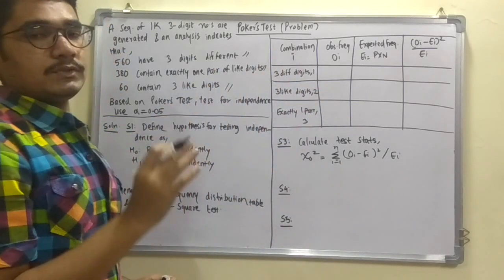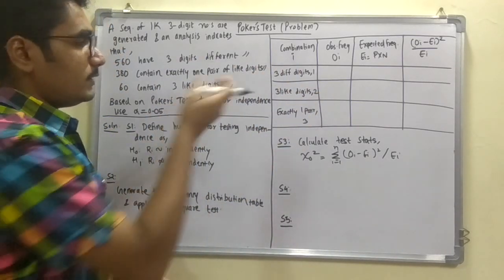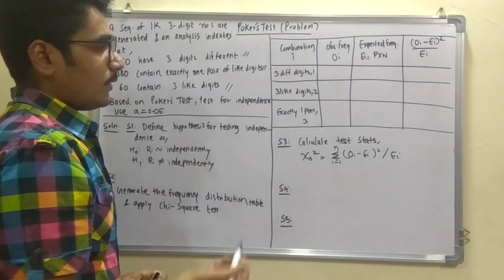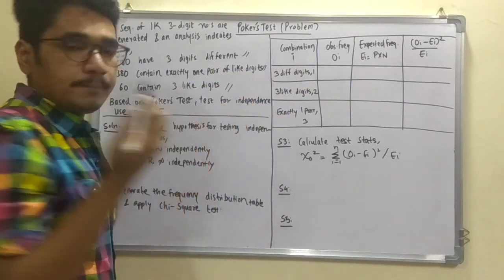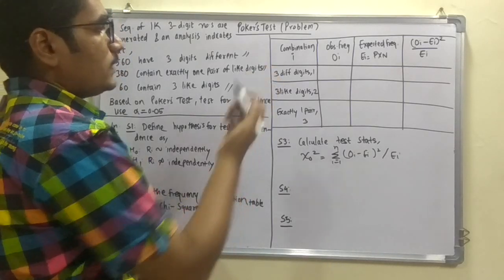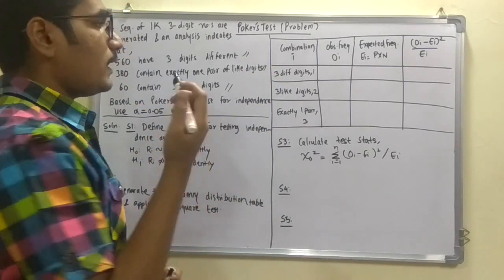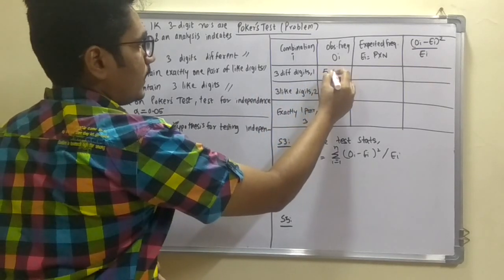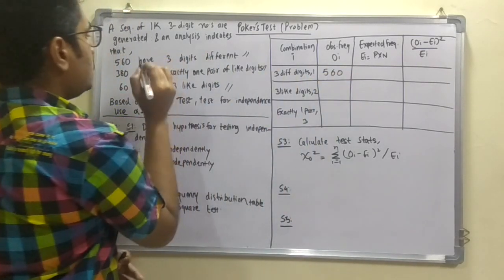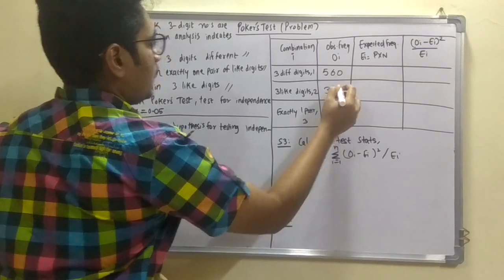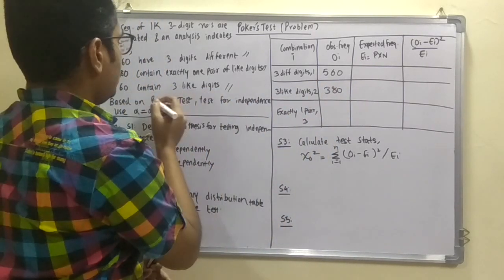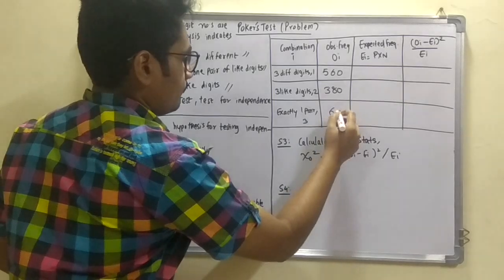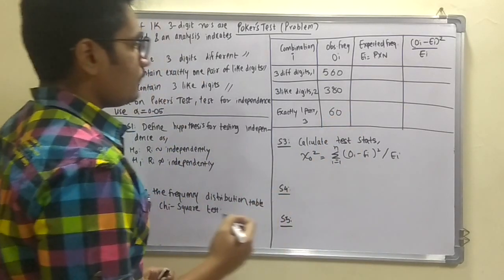This 1, 2, 3 are the numbers or the sequences which we give it to this. That is for 3 different digits it is condition number 1. 3 like digits it is for 2. And exactly 1 pair it is 3. And next column is our observed frequency. That is the frequency which we have here. So let's fill this that is 560, 3 like digits that is 380, and 3 contains 3 like digits, exactly 1 pair that is 60.